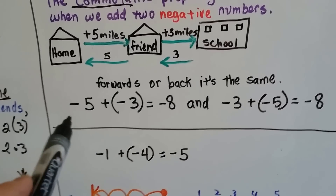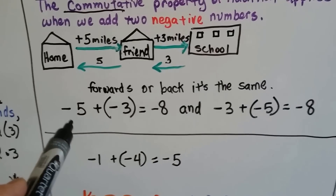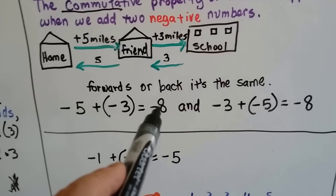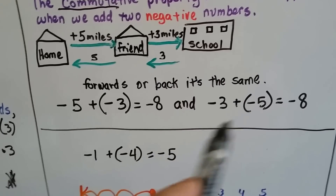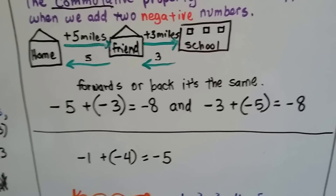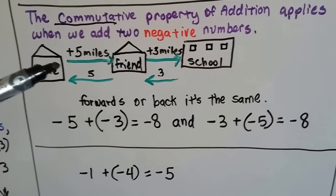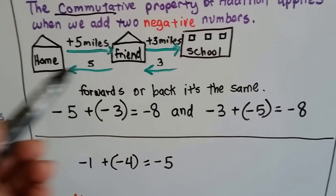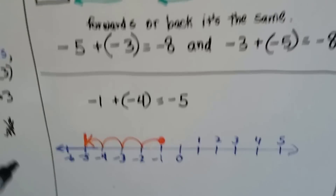So here's the commutative property when adding two negatives. Negative five plus negative three equals negative eight. We can put the negative three in front and the negative five in parentheses — we switched it around — and it still equals negative eight. That's the commutative property: it doesn't matter which order you add them, it's still going to equal the same thing.